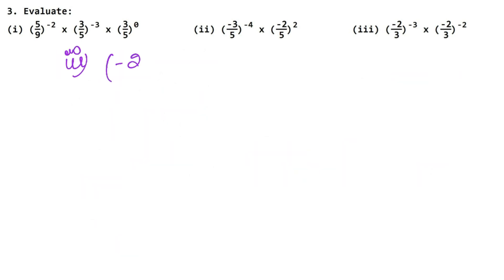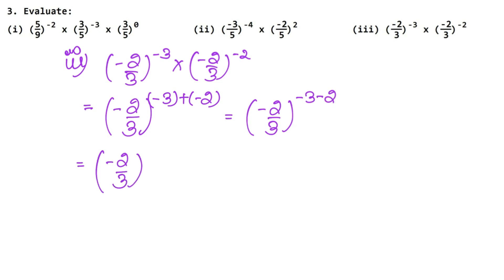Let's do last part now, third part. Minus 2 upon 3 minus 3 into minus 2 upon 3 minus 2. Now see, base value both same. So what we will do? When the base value added powers, 2 upon 3 as it is, minus 3 plus minus 2 upon 3 power.